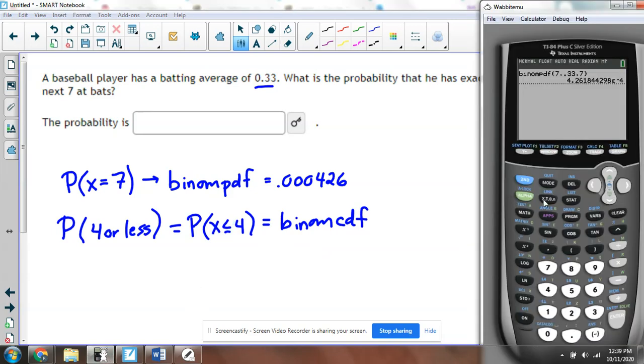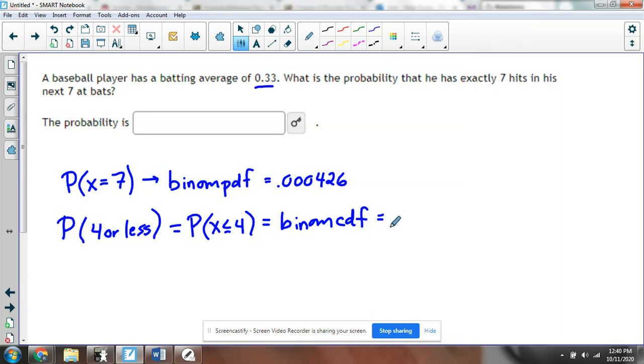We'll take the calculator and go back to the distributions menu and select binomial CDF. Everything's similar - there are 7 trials, the chance of success is 0.33, but now the X value means how many or less, 4 or less. Hit paste. The chance that he gets 4 or less is 0.7566.